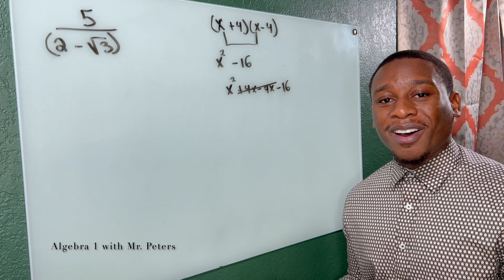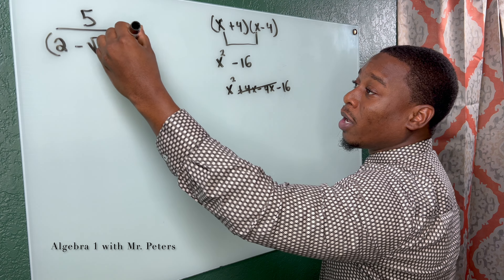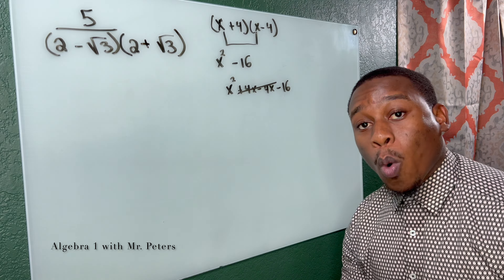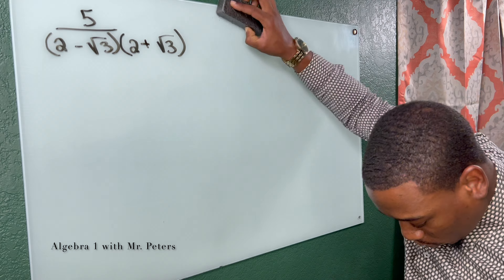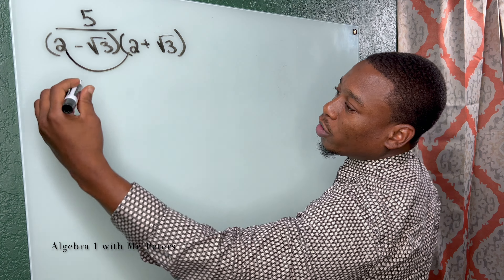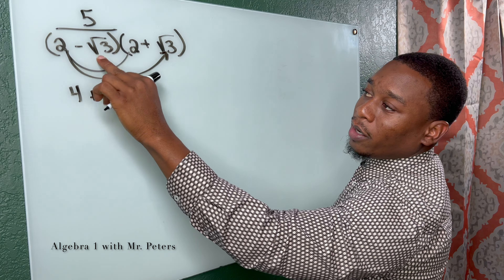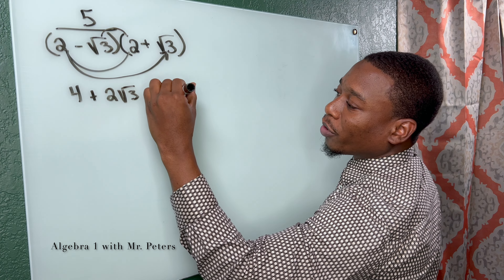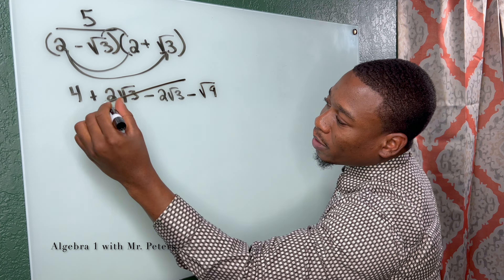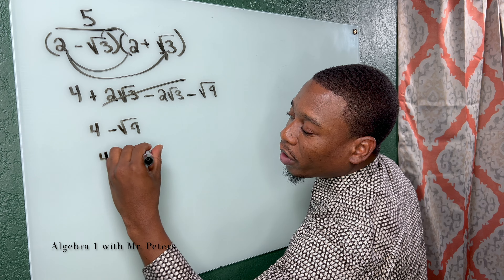The conjugate is just a word to say the same exact expression with a different sign. So to rationalize this denominator, I'll multiply by 2 and radical 3 — the same expression, but instead of subtraction, it's now going to be positive. So once we multiply 2 and 2, we're going to get 4. 2 times radical 3 is going to be 2 radical 3 — positive. Negative radical 3 times 2 is going to be negative 2 radical 3. And radical 3 times radical 3 is negative radical 9. When we focus in the middle, those terms are gone, and we're left with 4 minus radical 9. But remember, this is a perfect square, so it turns into 4 minus 3, which equals 1.